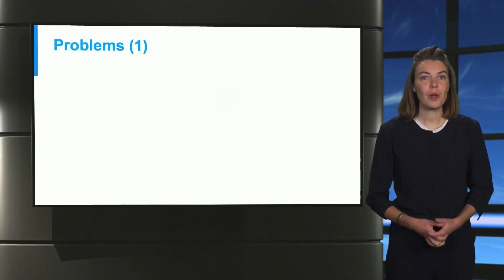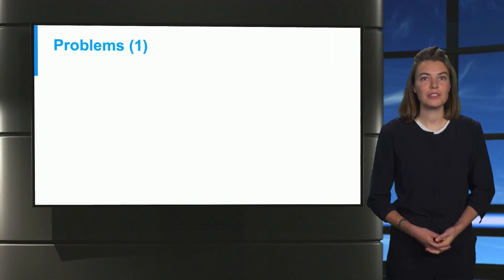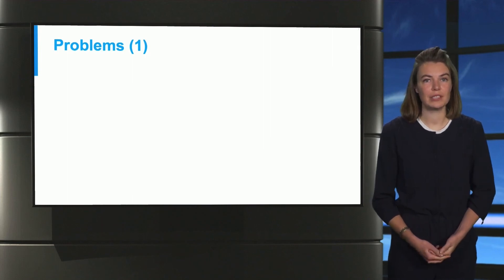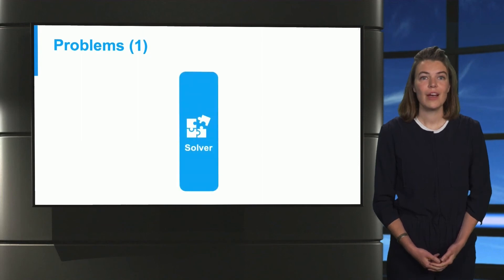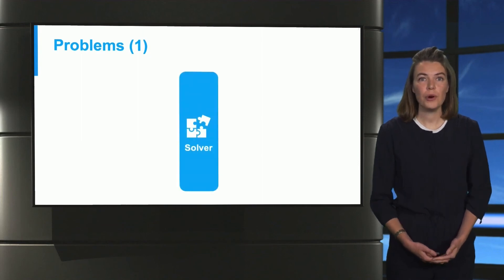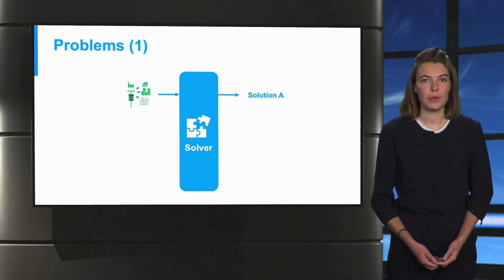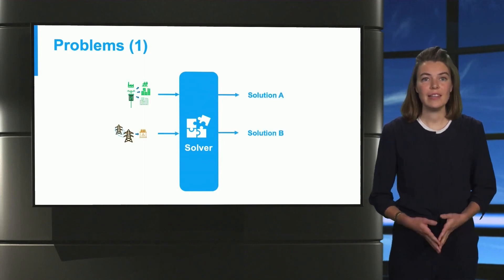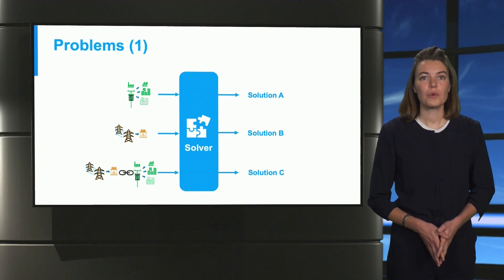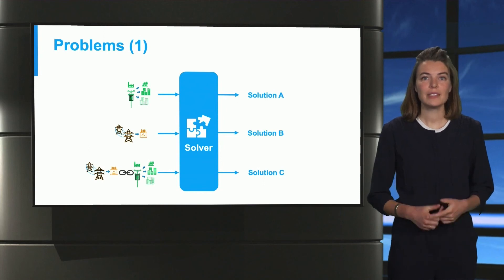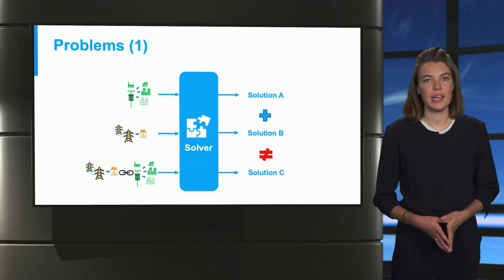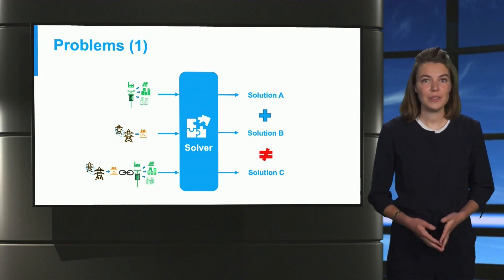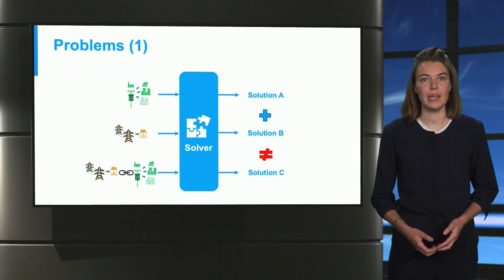There are certain problems associated with solving coupled transmission and distribution networks. Let us analyze those. Firstly, if we solve both the networks separately, we get a unique solution for the distribution network, the transmission network, and the coupled network. Remember that it's not a linear problem, which means that we cannot add the results together. Instead, we have to do that in an integrated way.